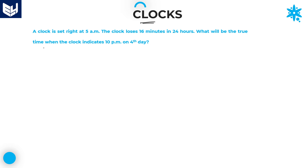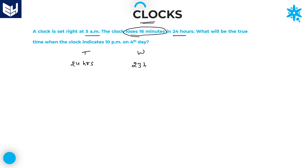The first question in this session is: a clock is set right at 5 AM. Exactly at 5 AM, the clock is showing the correct time. The clock loses 16 minutes in 24 hours. In 24 hours, the clock loses 16 minutes. It means that when the true time shows 24 hours, the wrong time shows only 23 hours and 44 minutes.